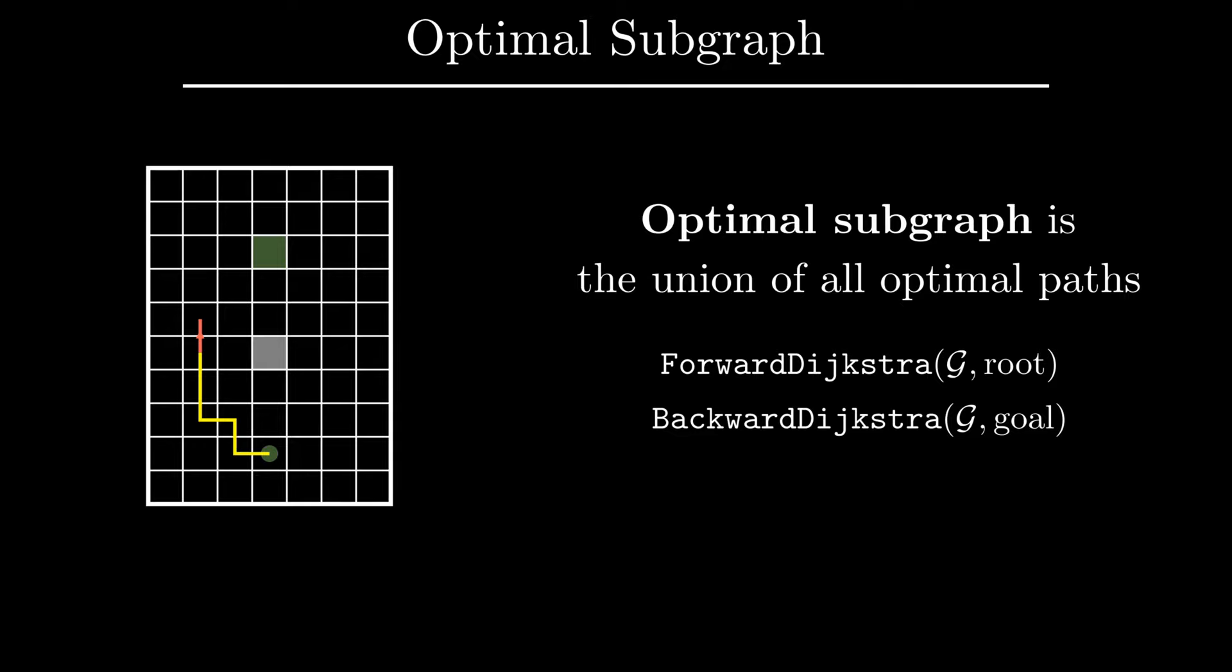Next, we run the Dijkstra algorithm backward, starting from the goal, which computes for us cost to go, the cost of an optimal path from edge's end to the goal. Once these values have been computed, it becomes very easy to determine whether any given edge belongs to the optimal subgraph.